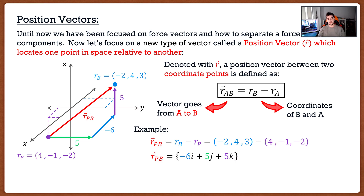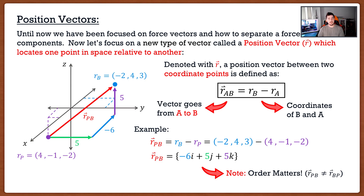I want to note one more thing because it gets every student on the exam. When I mark exams, maybe 20% of students always fall for this trap: the order of position vectors matters. The position vector from P to B is not the same as from B to P — they have the same numbers but multiplied by negative 1; it's the opposite direction. Please keep that in mind and don't be that student who uses the wrong one.